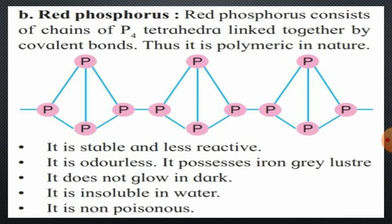Red phosphorus possesses an iron-gray luster — it is shiny. It does not glow in the dark, unlike white phosphorus. It is insoluble in water. It is non-poisonous, while white phosphorus is poisonous. These are the characteristic properties of red phosphorus: stable, less reactive, odorless, iron-gray luster, does not glow in dark, insoluble in water, and non-poisonous.